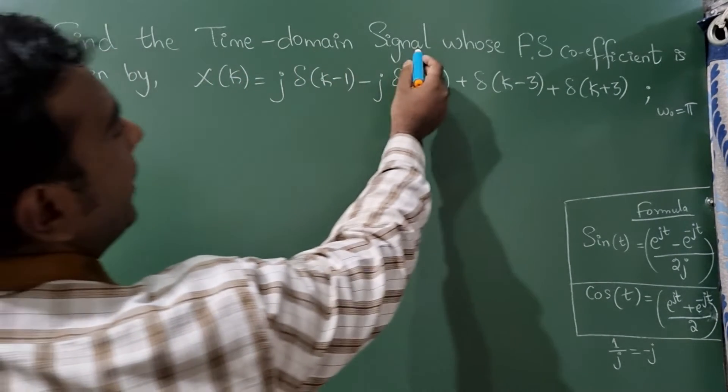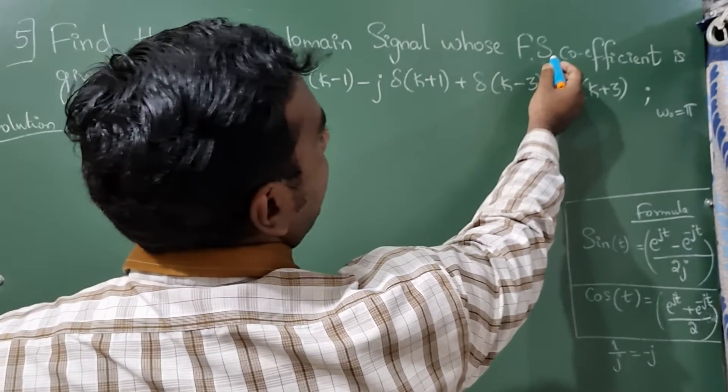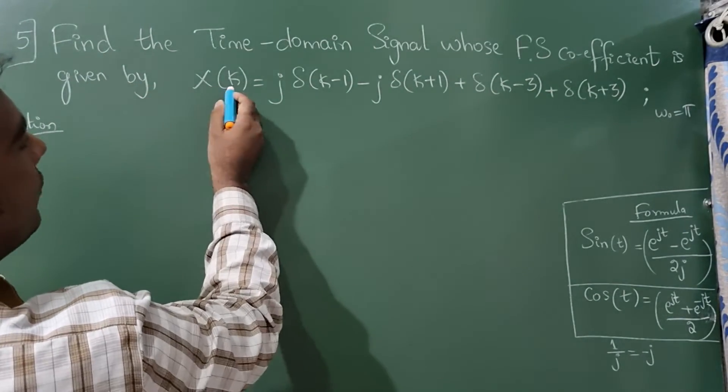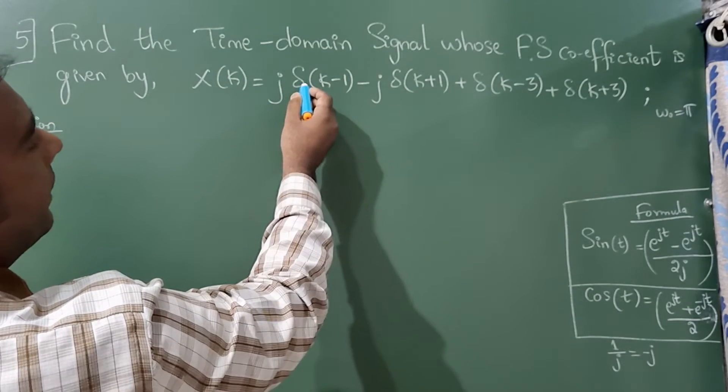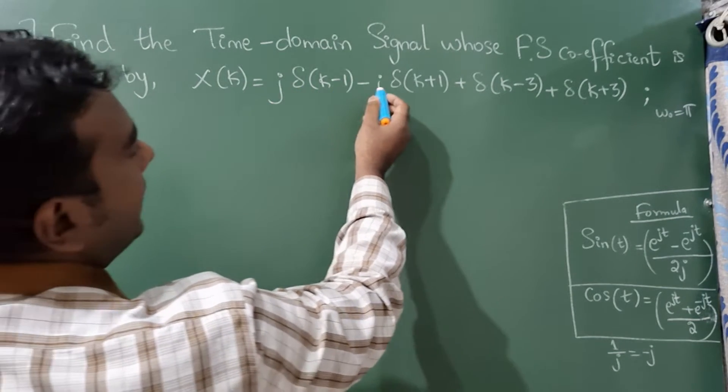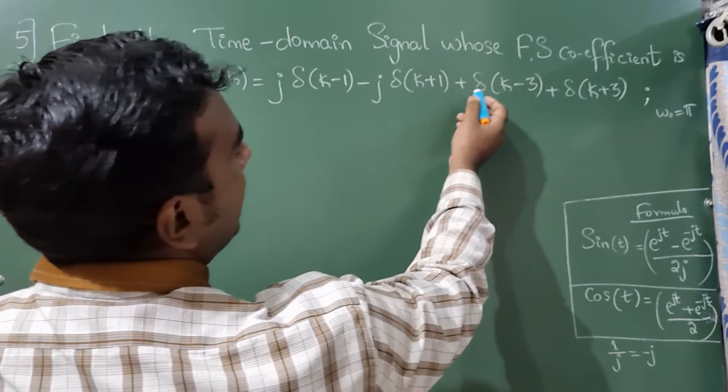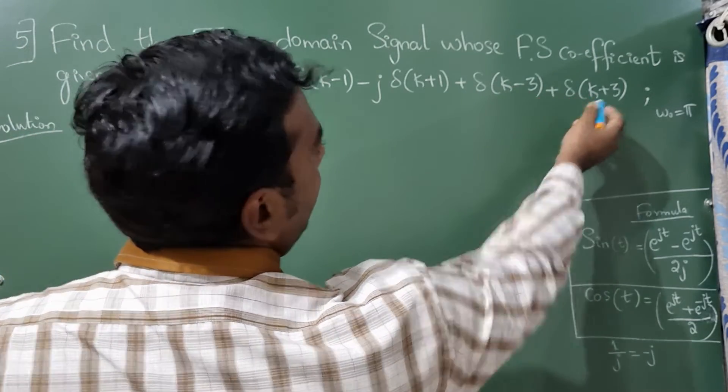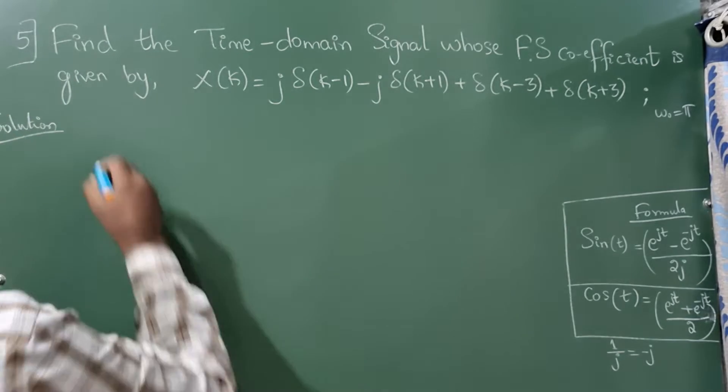Find the time domain signal whose Fourier series coefficient is given by x of k is equal to j delta k minus 1 minus j delta k plus 1 plus delta k minus 3 plus delta k plus 3.